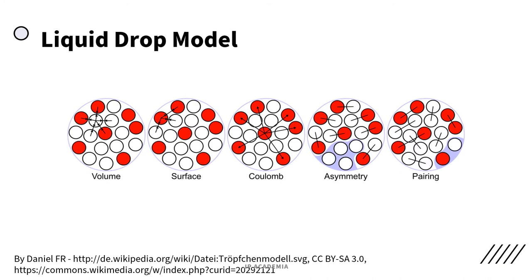Here we have the illustration of the terms of the semi-empirical mass formula in the liquid drop model of the atomic nucleus. The liquid drop model accounts for the spherical shape of most nuclei and predicts the binding energy. This mass formula is defined based on the atomic number Z and the atomic mass number A. The formula can be described using five terms: the volume energy term, the surface energy term, the Coulomb energy term, the asymmetry energy term, and the pairing energy term.